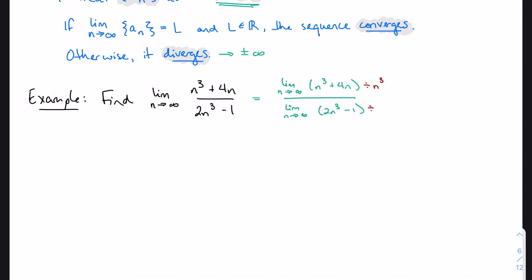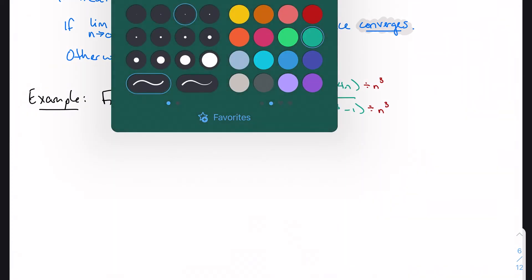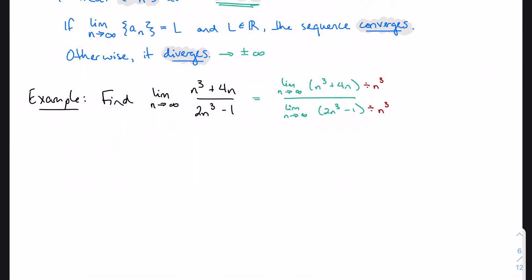So we'll divide everything through by n cubed. And in this case, on both sides. It just so happens that in this case, it works out that way on both sides. So when I make that correction, let's see, n cubed divided by n cubed is 1. 4n divided by n cubed is going to give me 4/n². And then I'm going to do the same thing down here.